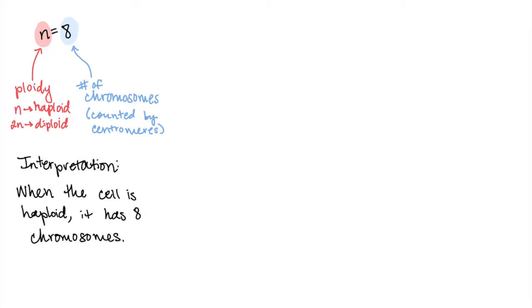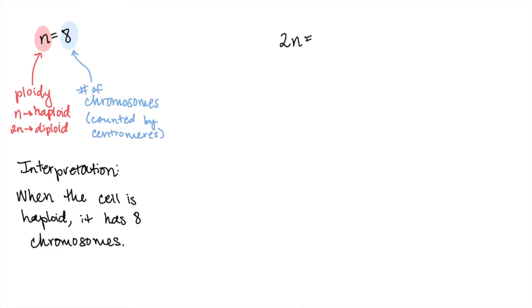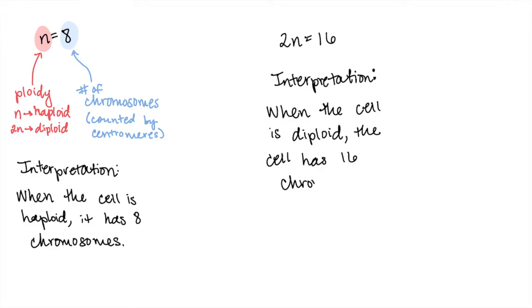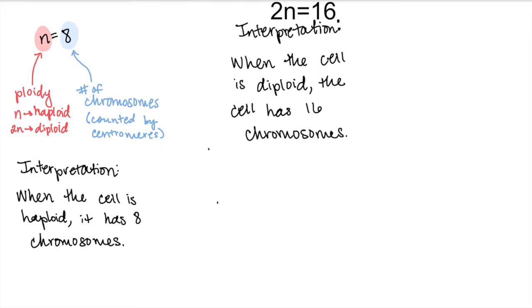Now, you can also have an equation like this when the cell is diploid, and it will look like this: 2n equals 16. And this means that when the cell is diploid, then the cell will have 16 chromosomes. And you can also convert from the diploid number to the haploid number by dividing both sides by 2, and you'll get that n equals 8.